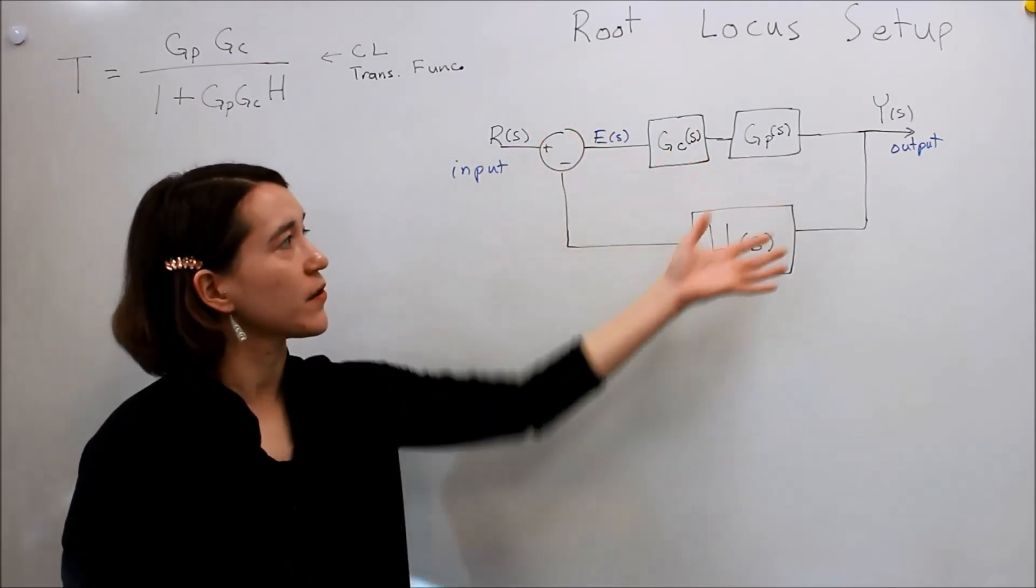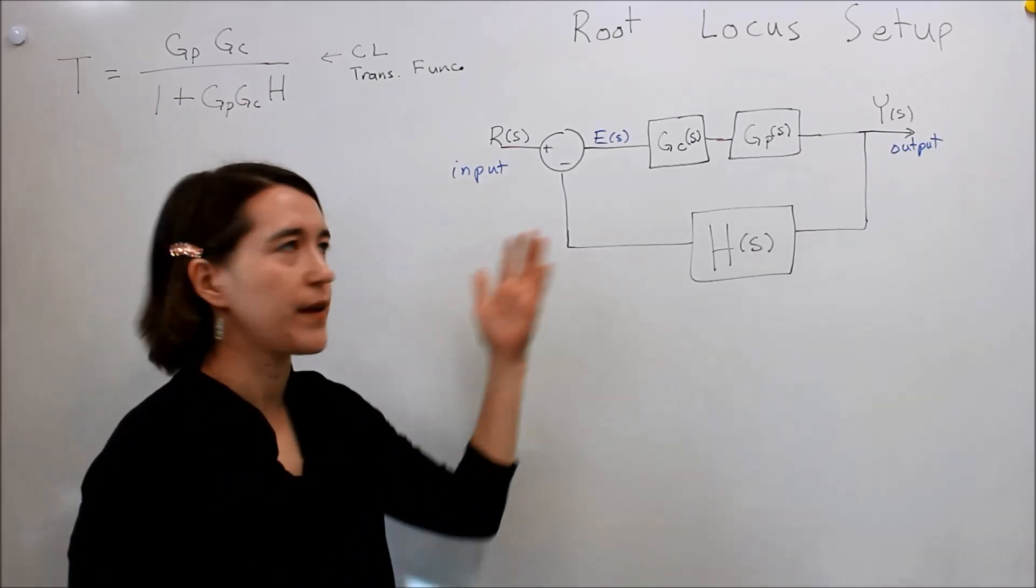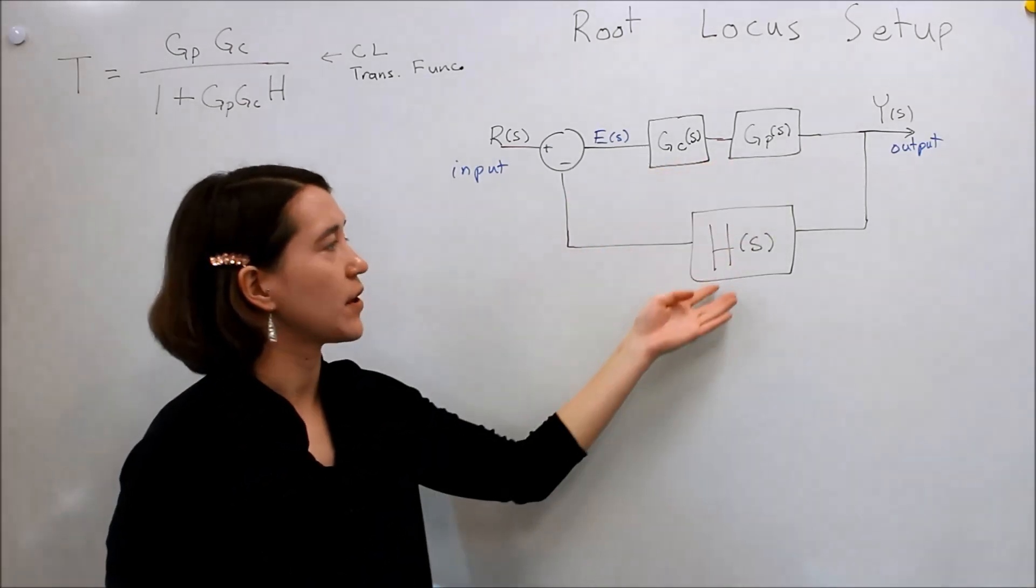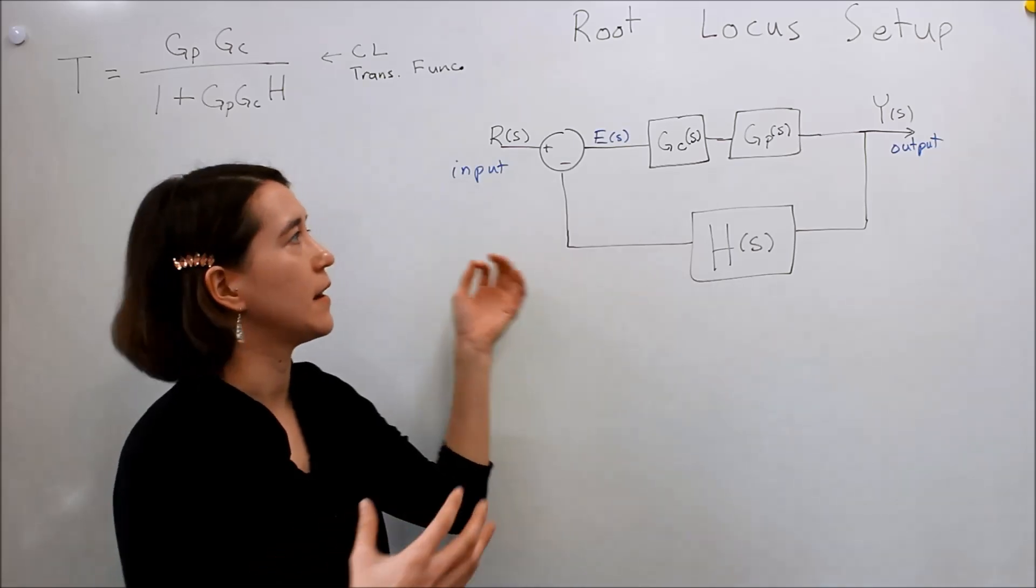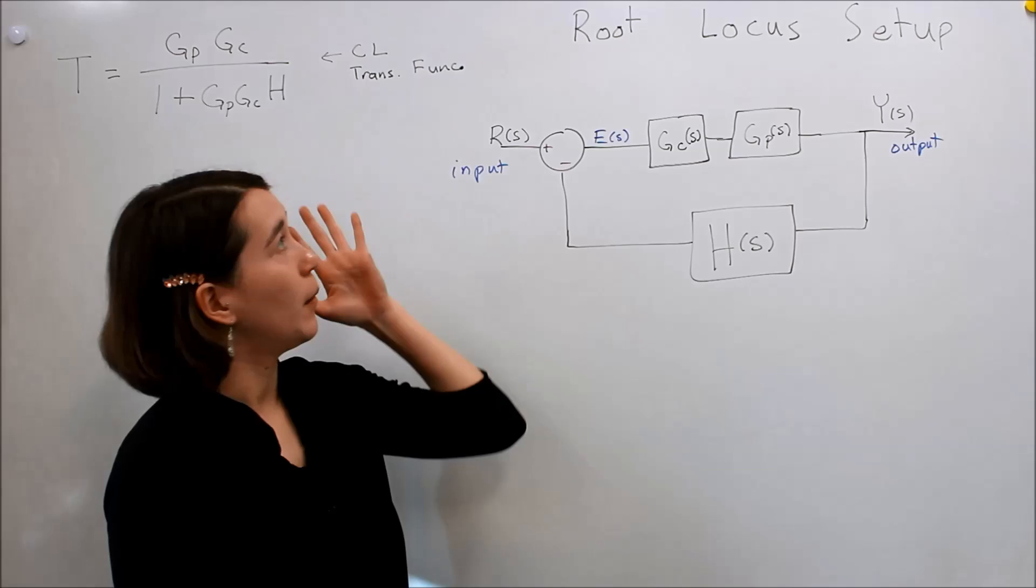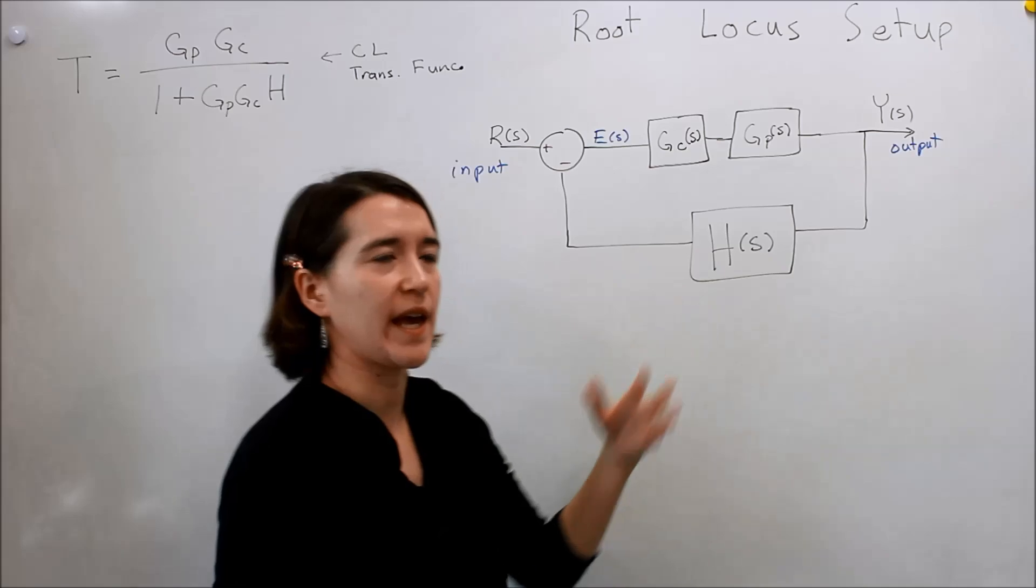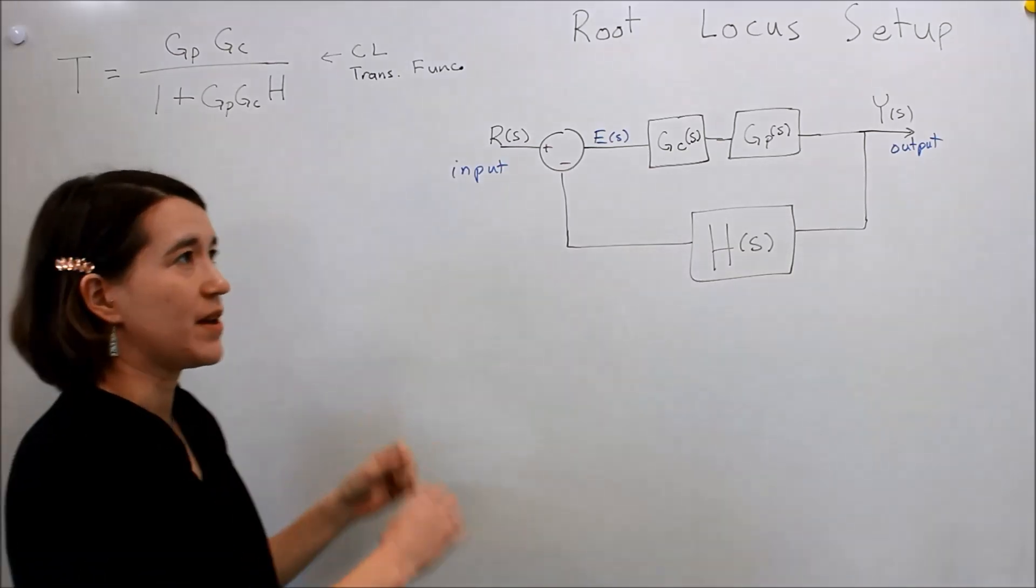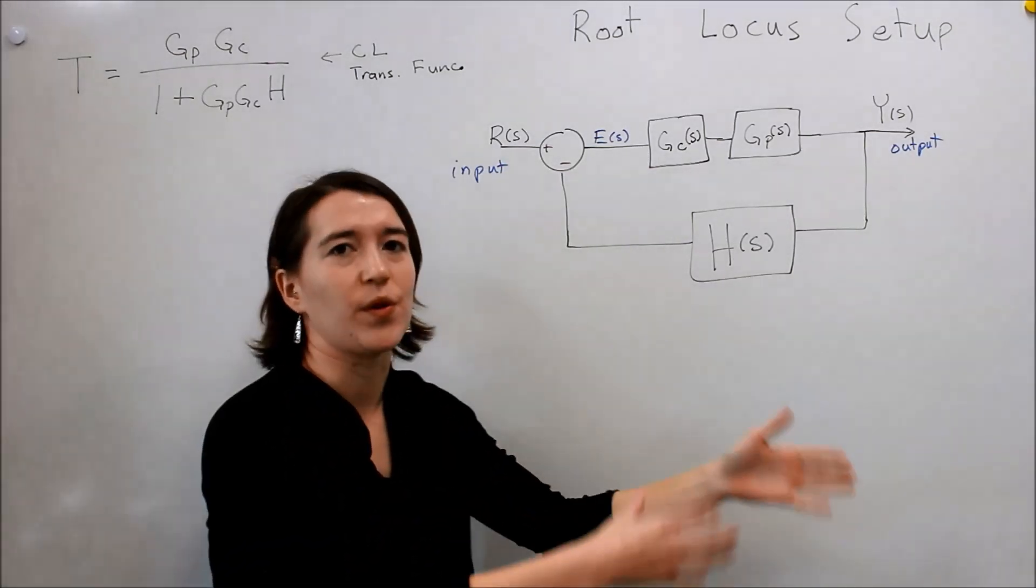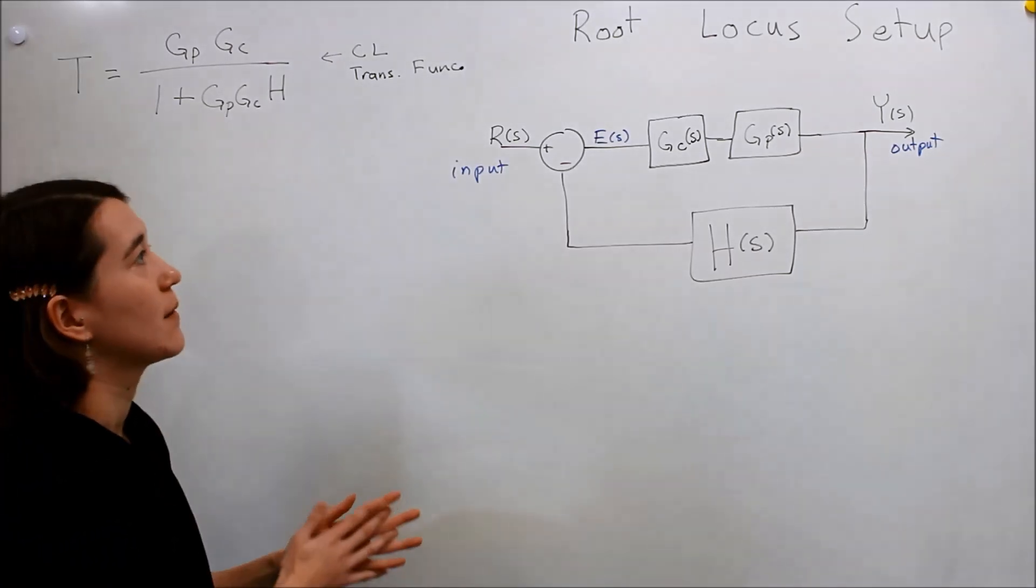So now we're going to use our closed loop control here to look at how the different transfer functions affect the stability of our closed loop system. And we're going to do this by looking at the root locus, which I'm introducing, but first we're just going to set up the problem and talk about what it means. And then in future videos we'll talk about each individual part and how we actually map the root locus.